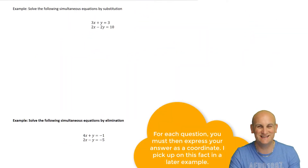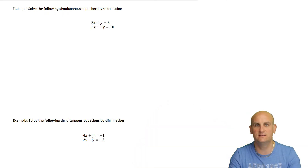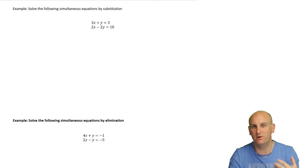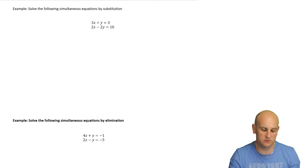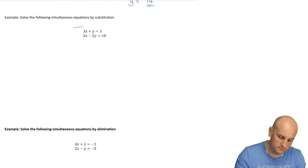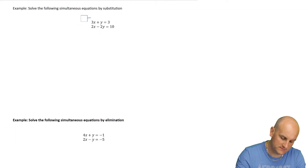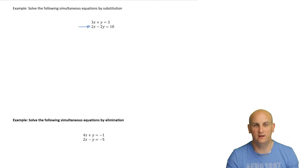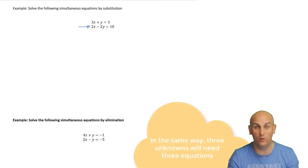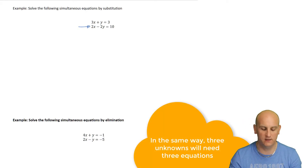What about this next example? Again, it says by substitution, and it's in a slightly different format with an x column, a y column, and a number column. The point is I'm trying to substitute out one of the letters. I have two unknowns, so I need to find two equations or substitute out the unknown.